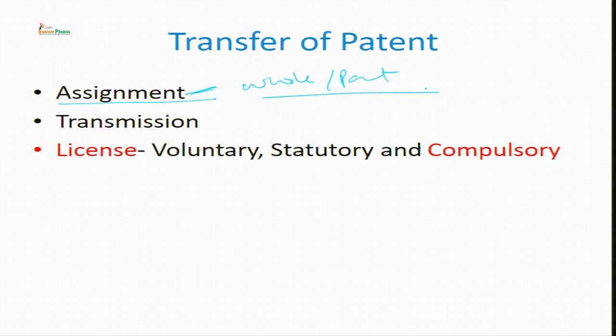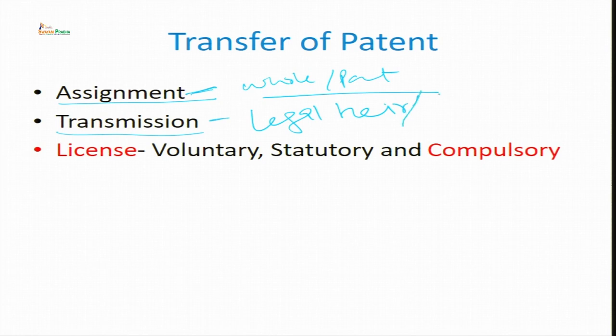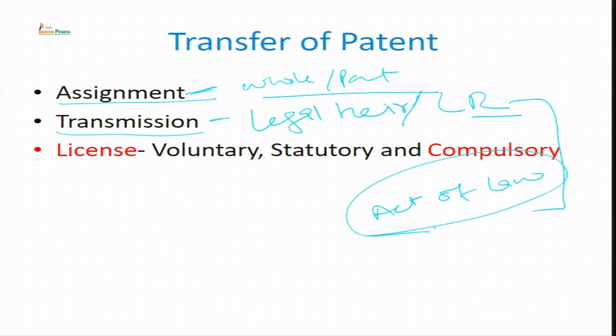The first type of transfer is assignment. Assignment can be given by the patentee in whole or in part, and after giving the assignment, his right may come to an end. The second thing is transmission, which happens in the case of death. When a particular patentee who has registered an invention in his name dies, his legal representatives or legal heirs will become the owners. This is by act of law — transmission is done under the act of law.